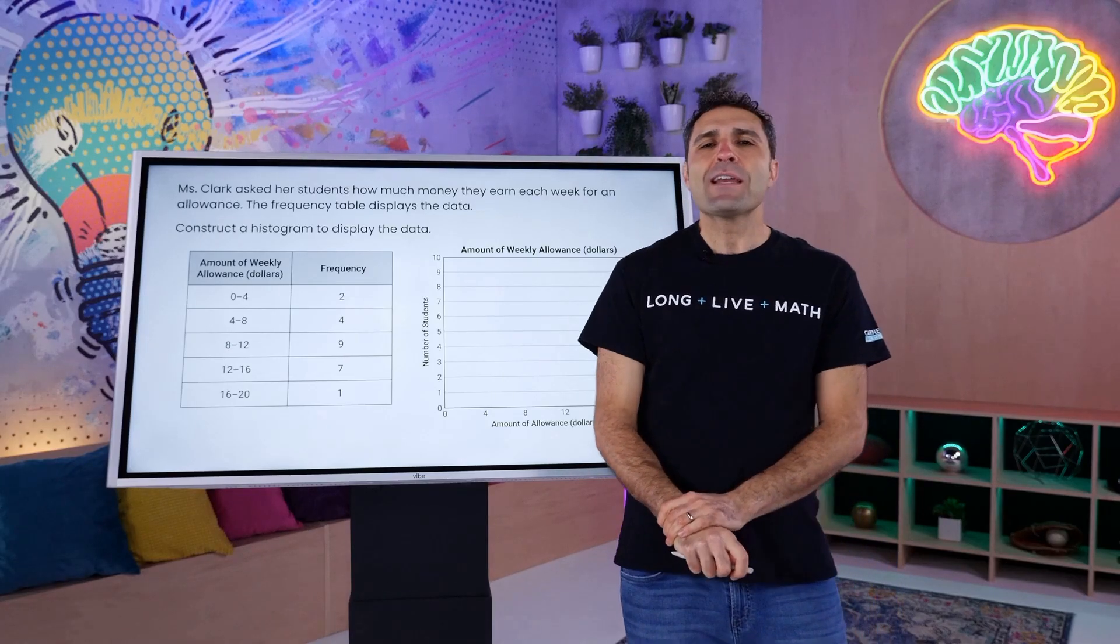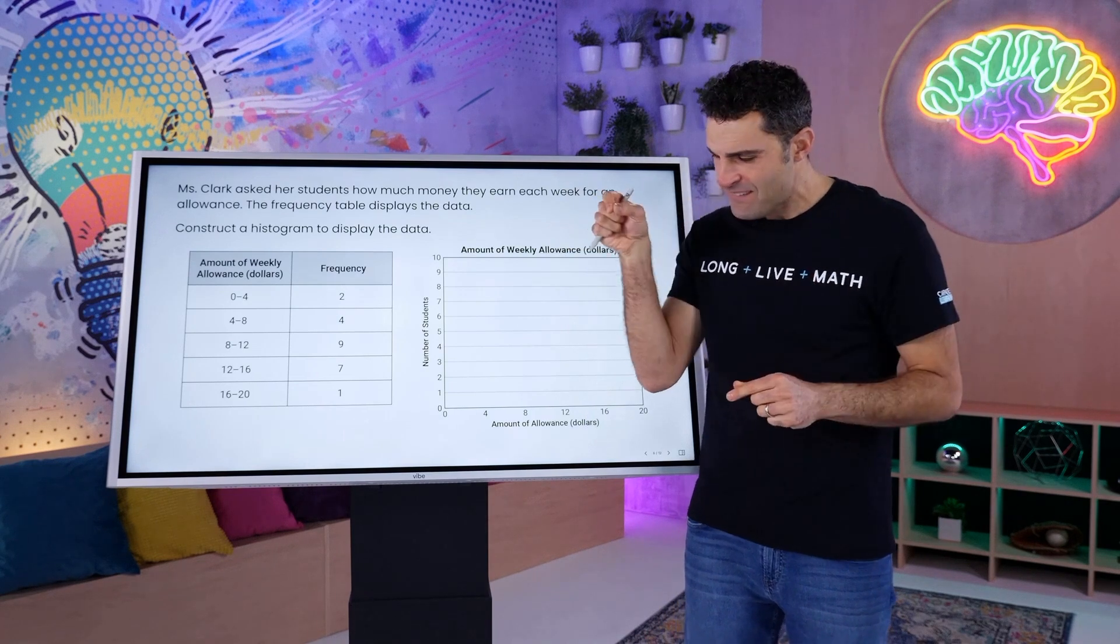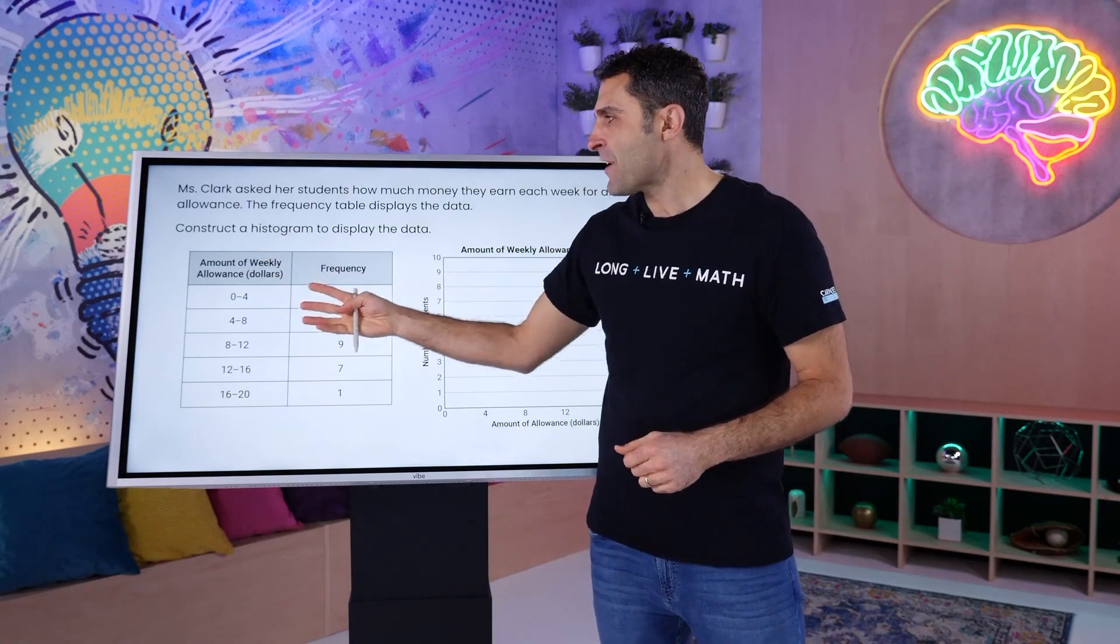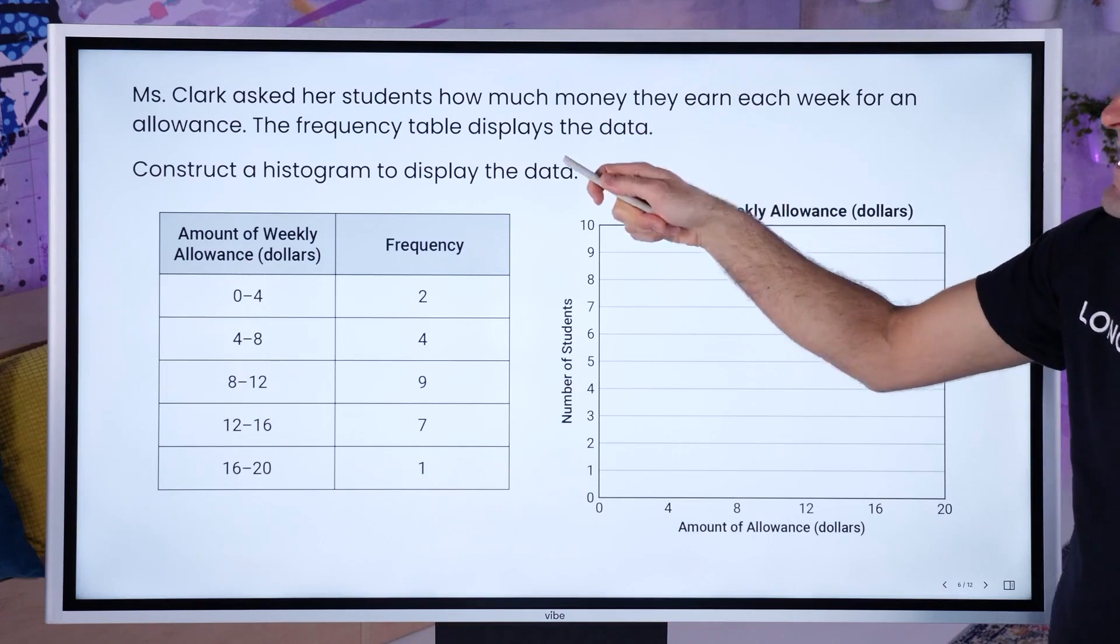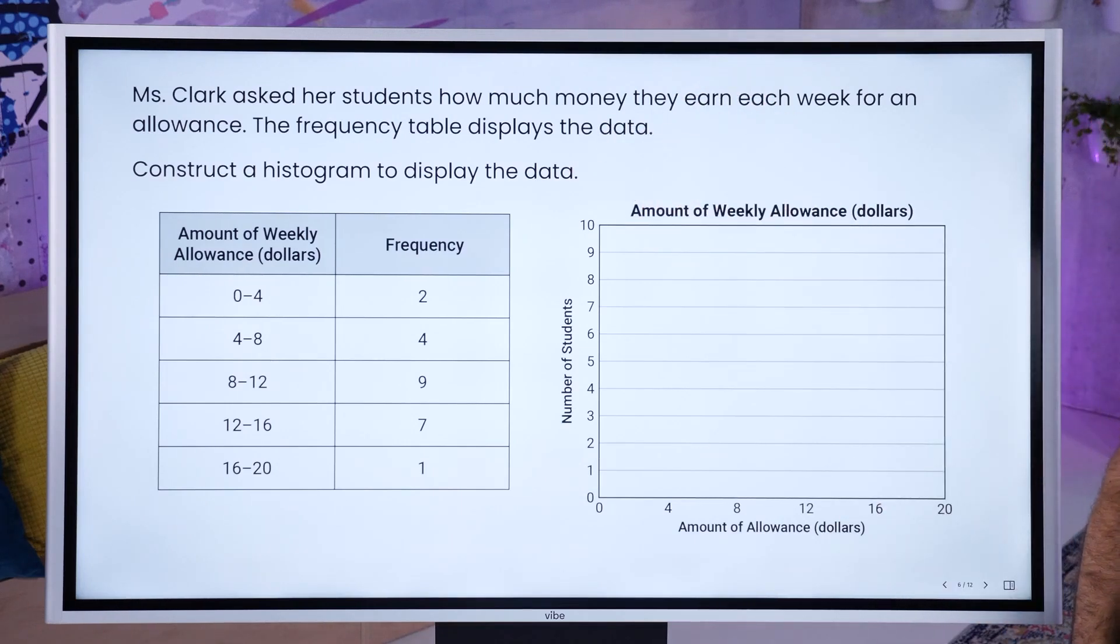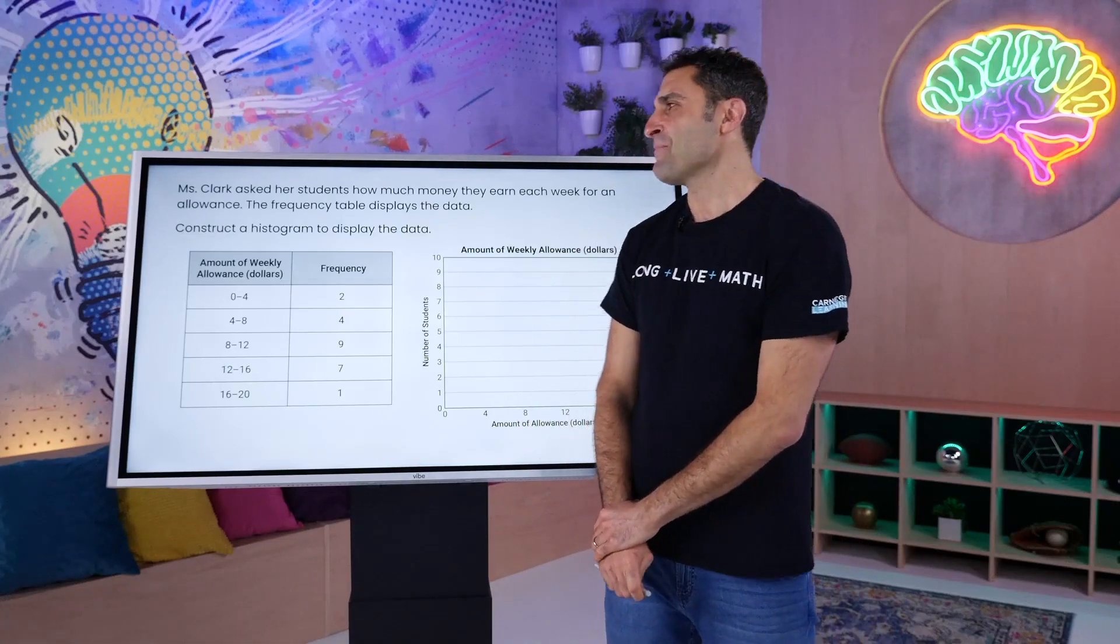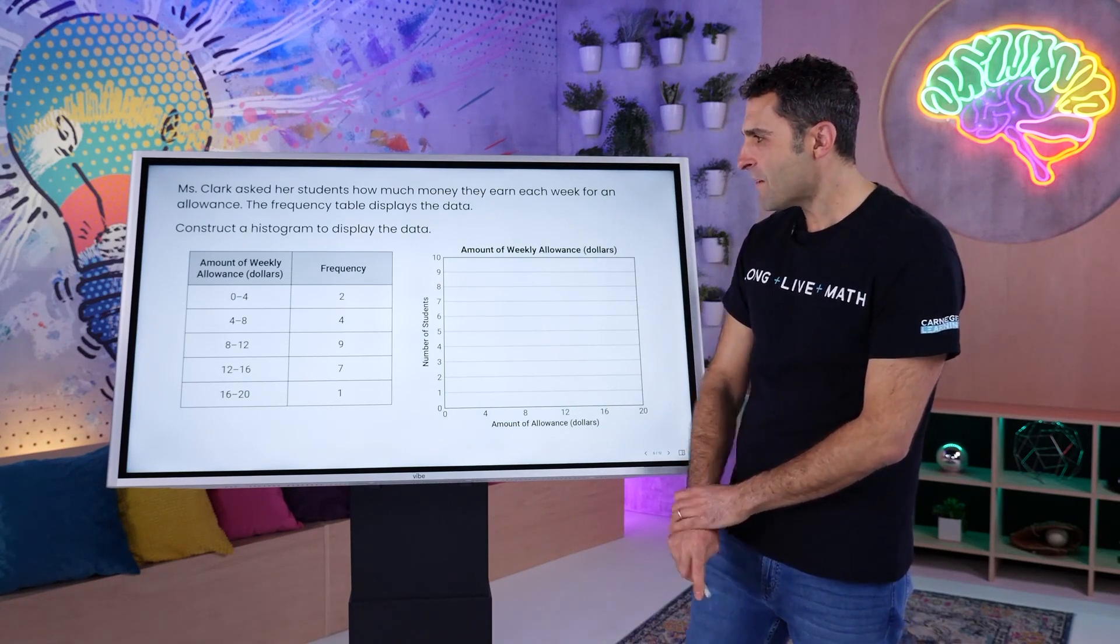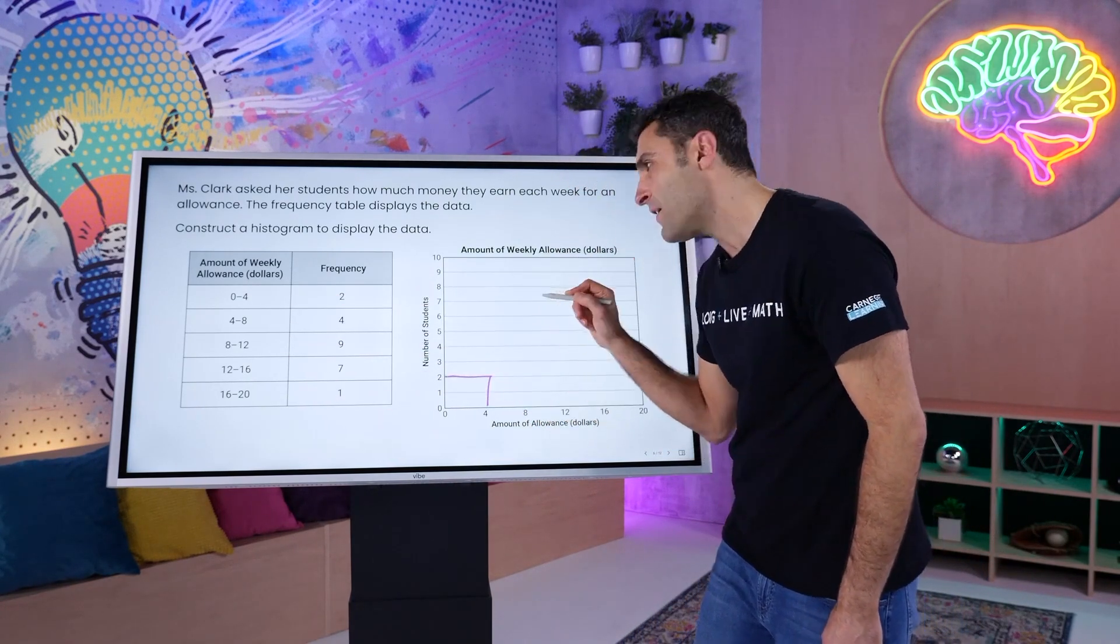Willkommen zurück zum Teil der Datenkonstruktion. Sprechen wir über Frau Clark, dann erstellen wir ein Histogramm und besprechen seine Bedeutung. Frau Clark fragte ihre Schüler, wie viel Geld sie jede Woche als Taschengeld verdienen. Die Häufigkeitstabelle zeigt die Daten. Richtig. Lehrer erstellen Histogramm zur Darstellung der Daten. Lasst uns darüber reden, wie viele sind 2, wenn die Zahlen von 0 bis 4 gehen. Da hast du.